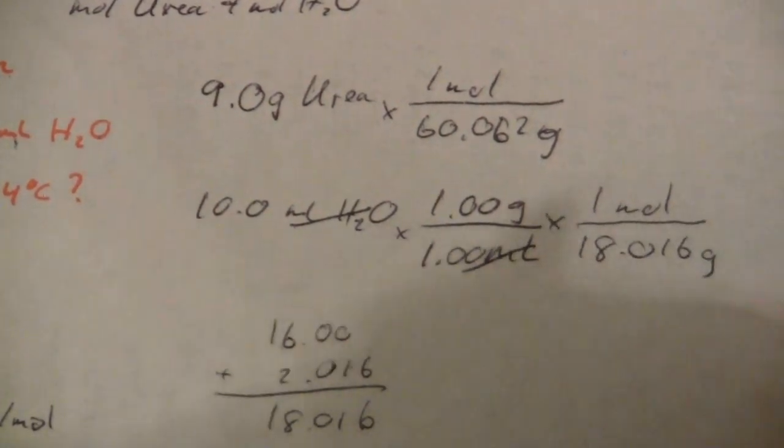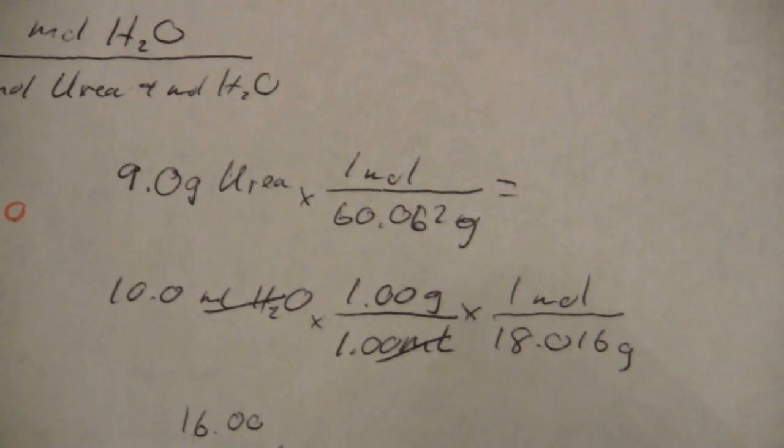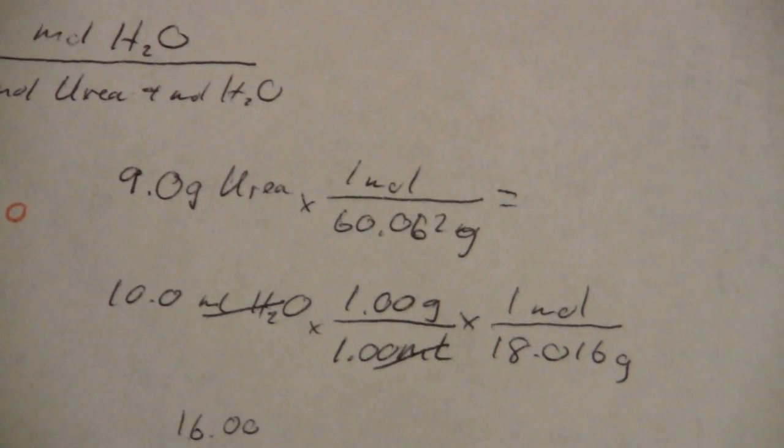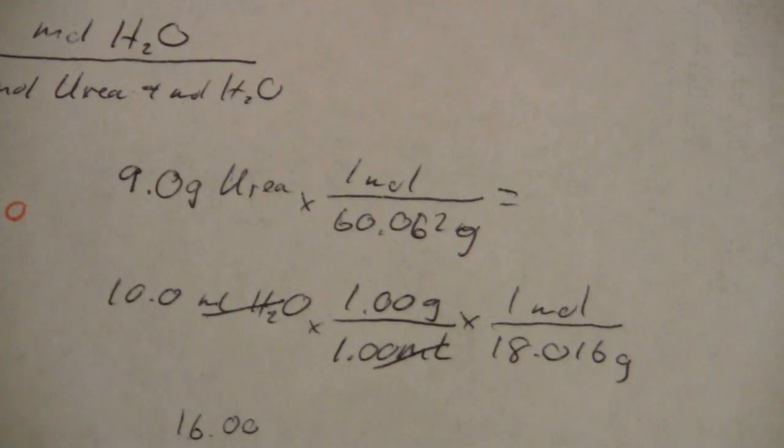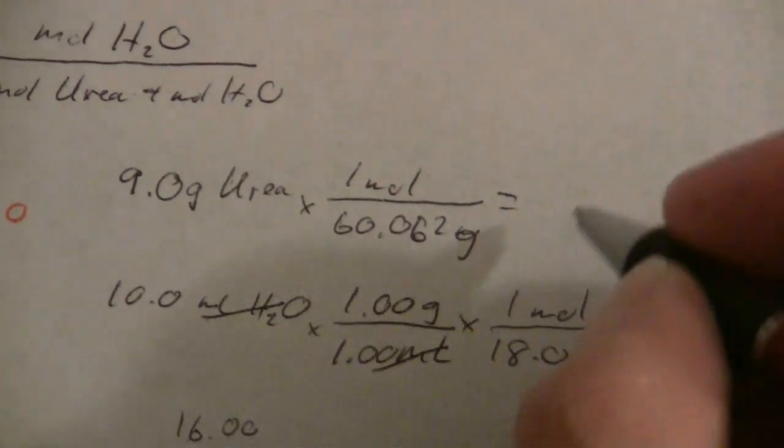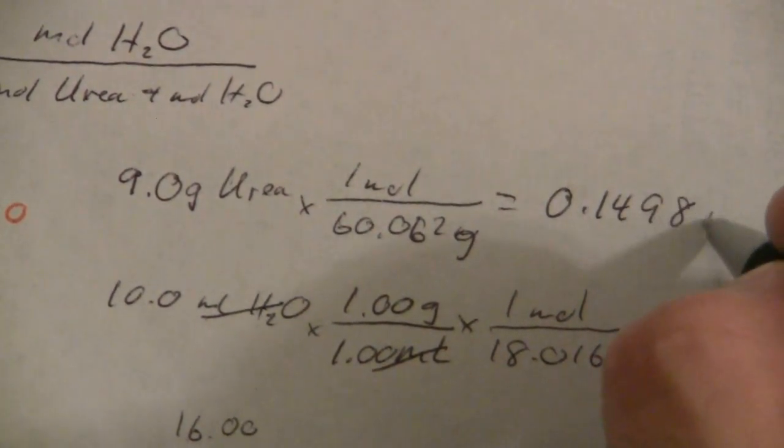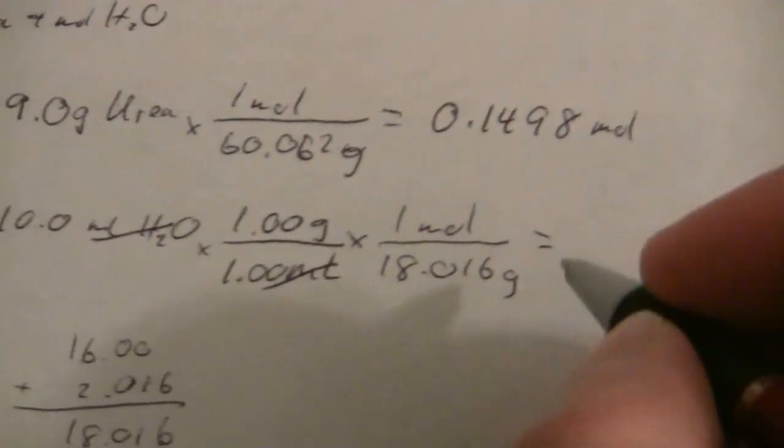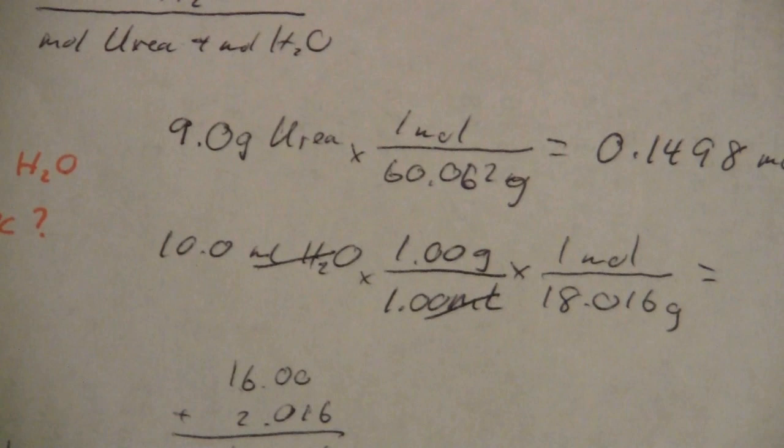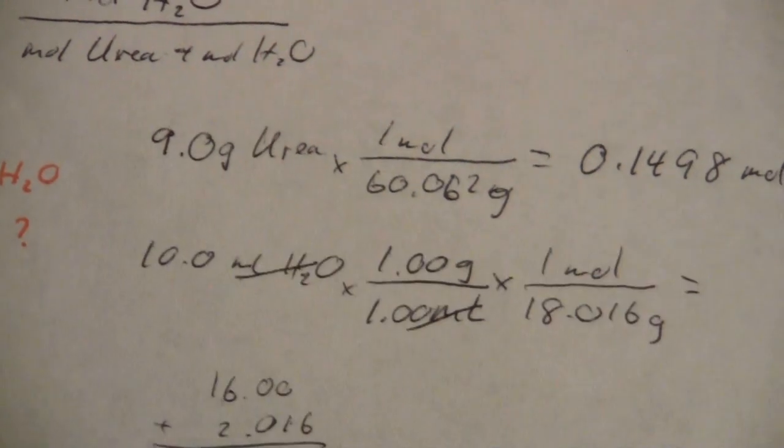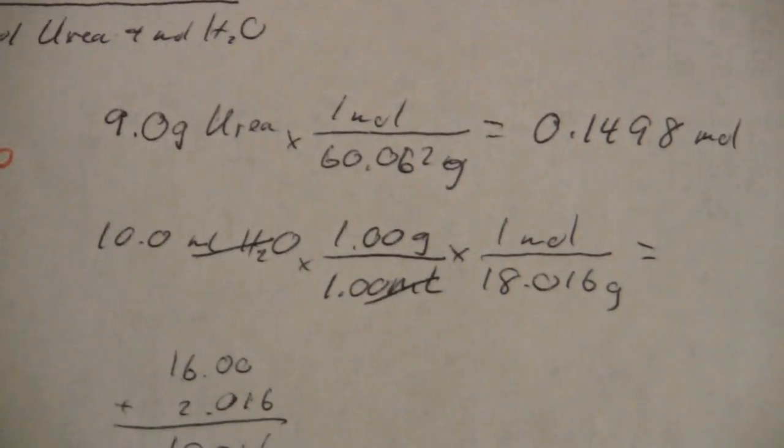What we get here is the moles of urea: 9.0 divided by 60.062, and we get 0.1498 moles of urea. For the 10 milliliters of water, we divide by 18.016, and we get 0.556.